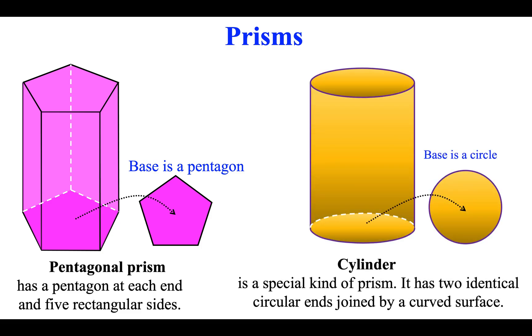Cylinder is a special kind of prism. It has two identical circular ends joined by a curved surface.